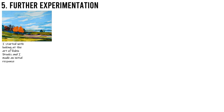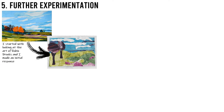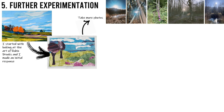It's important to remember that this is just an example of how I might experiment further with a particular project — your project may look completely different, so this is just for ideas. For this project I started by looking at the art of Robin Brooks and made an initial response. Robin Brooks is known for his landscape images, so I went on to take photos of woodland, lakes, and hills.